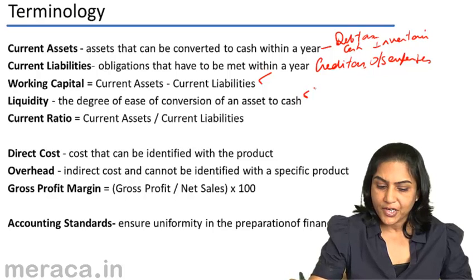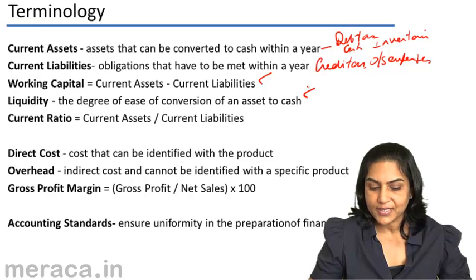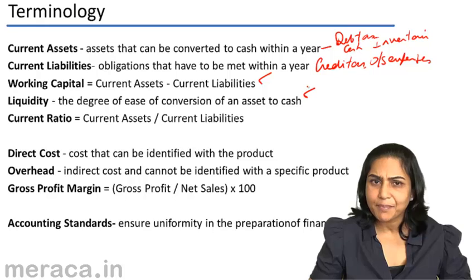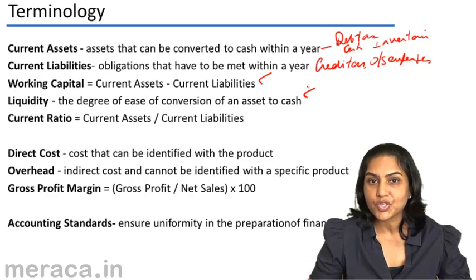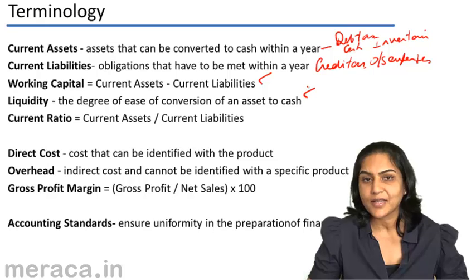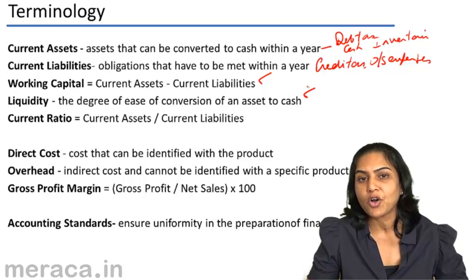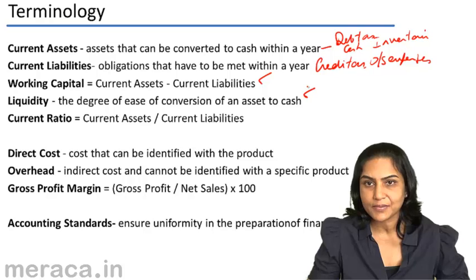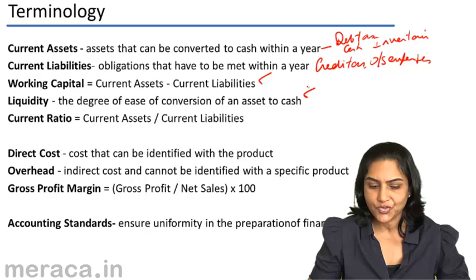Current ratio is current assets divided by current liabilities. An accepted standard of current ratio is 2, which suggests that current assets should be double that of current liabilities. Having said that, it could vary from industry to industry.